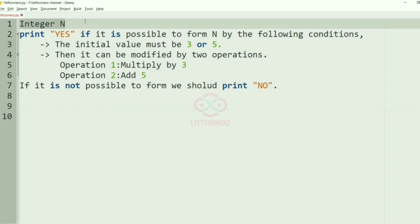First we understand our question. The program must accept the integer N and the program must print YES if it is possible to form N by the following conditions. The initial value must be 3 or 5.